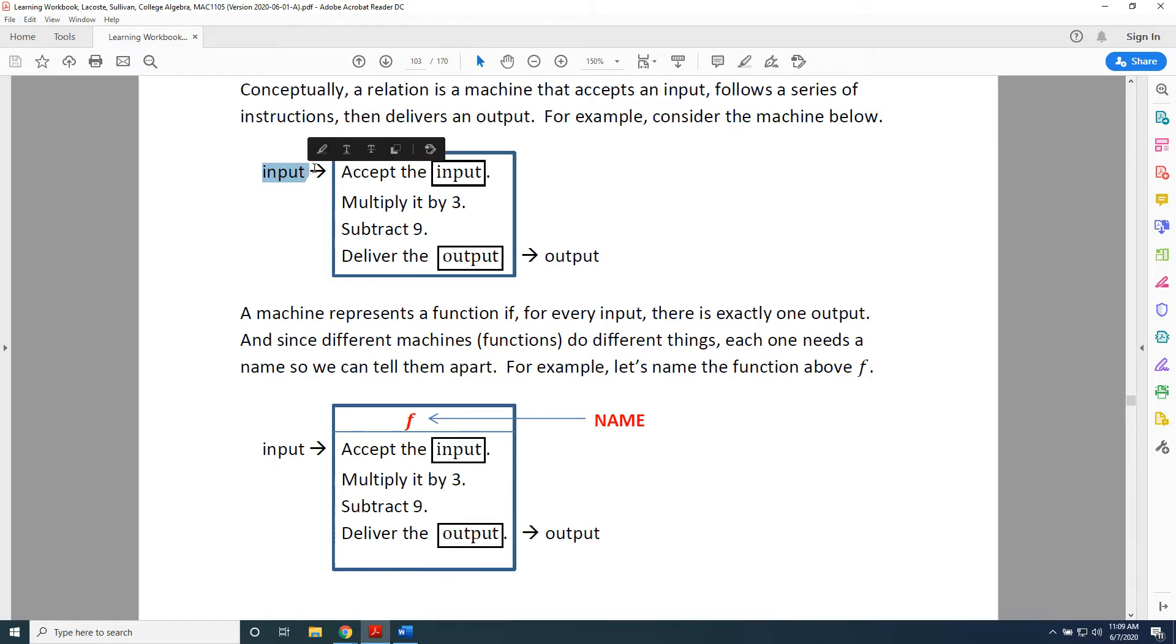An input comes into the machine, represented here by this blue box. The instructions are followed: accept the input, multiply it by 3, subtract 9, deliver the output. And then the output comes out.